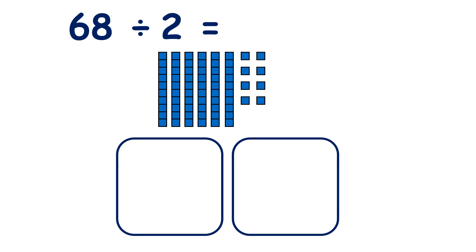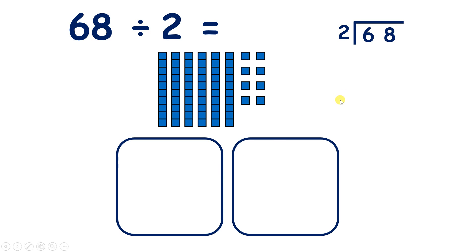We have 68 divided by 2, so we have 6 tens and 8 units, and we're going to divide those into 2 groups. Today we're going to learn how to use short division.